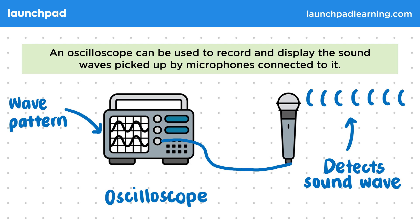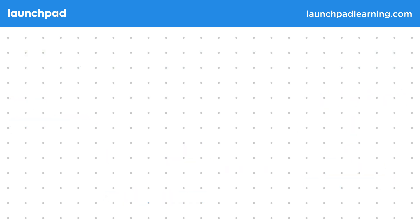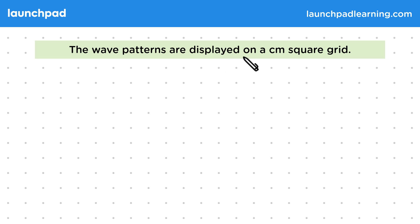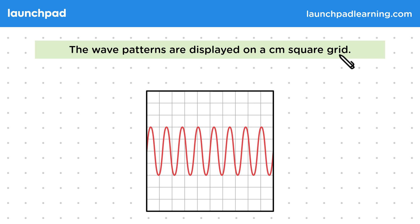This wave pattern tells us about the properties of the wave. Let's take a look at what's on the screen in more detail. The wave patterns are displayed on a centimetre square grid. Here's a closer look at the sort of pattern we'd see on the screen. This wave pattern represents a sound wave. But remember that sound waves are longitudinal waves, so they shouldn't have this shape. This is because we're not looking at an image of the wave, but rather how the displacement of the wave at the microphone changes over time.